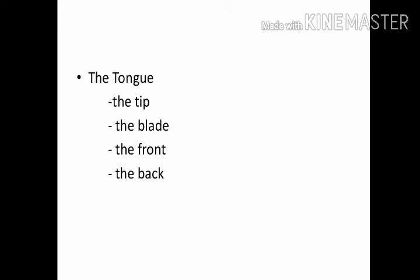The tongue is an important speech organ. The tongue is divided into the tip, the blade, the front, and the back. The part of the tongue that lies opposite to the teeth ridge when the tongue is at rest is called the blade of the tongue, and the extreme tip of the blade is called the tip. The part of the tongue that lies opposite to the hard palate when the speech organs are at rest is called the back of the tongue.